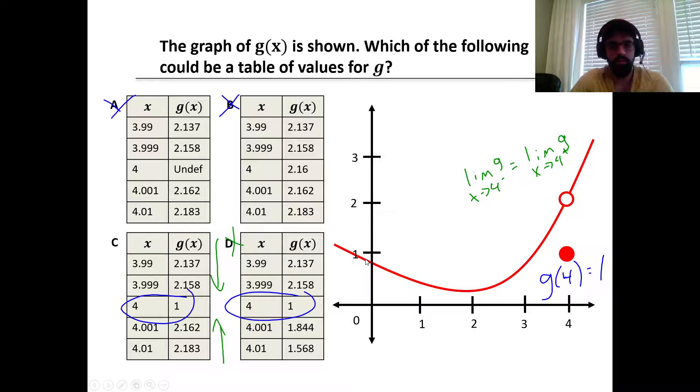Now as we look at the limits as x approaches 4 from the left, it looks like it's about 2. However, if we look at the tables for C and D, as we approach 4 from the left, they both are a little higher than 2. So 2.137 to 2.158 for both tables.